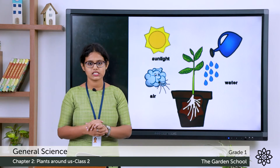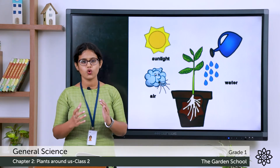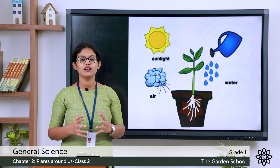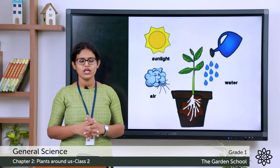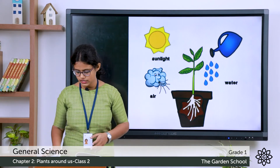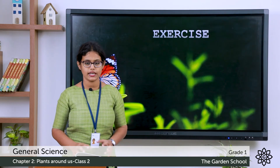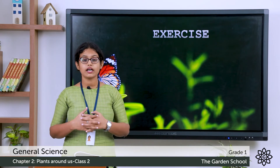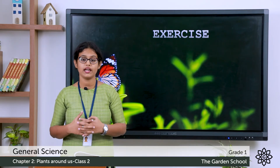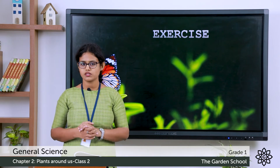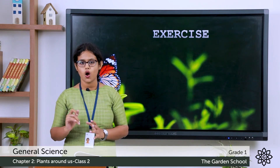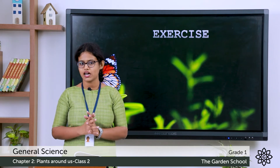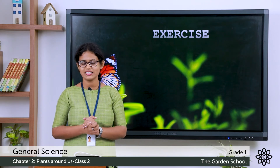So that is all about this chapter. We learned about different kinds of plants, and then we learned about where plants grow. Now we'll move on to the exercises — take page number 10. The first exercise: tick the correct word to fill in the blanks. There are three questions, each with three options. I'll read out each question and you can tick the right answer.